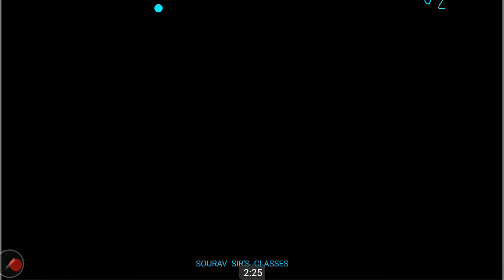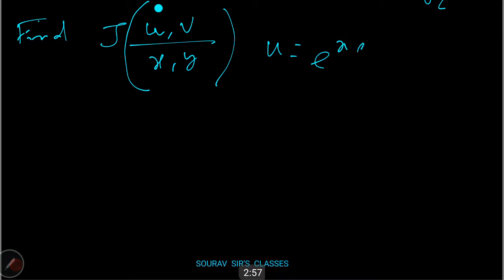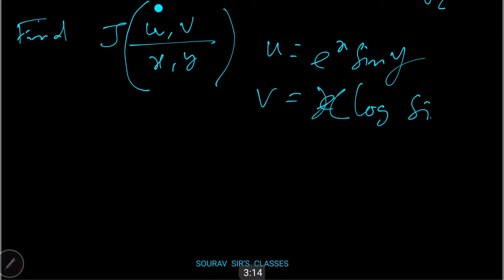Let me proceed with some more advanced problems. The question asks: find the Jacobian of u,v with respect to x,y, where u = e^x · sin(y) and v = x · log(sin y). All you have to do is find the required partial derivatives.